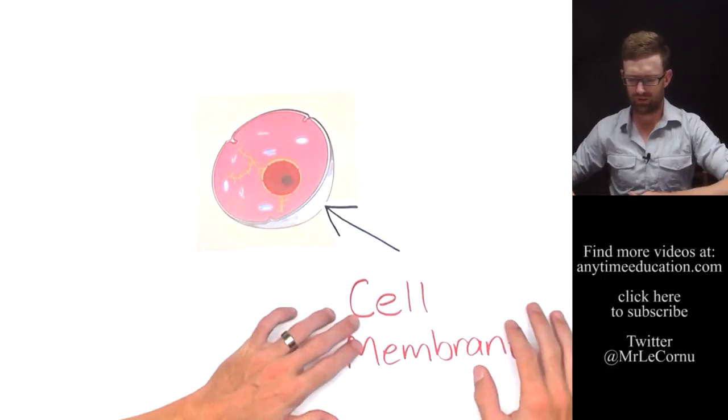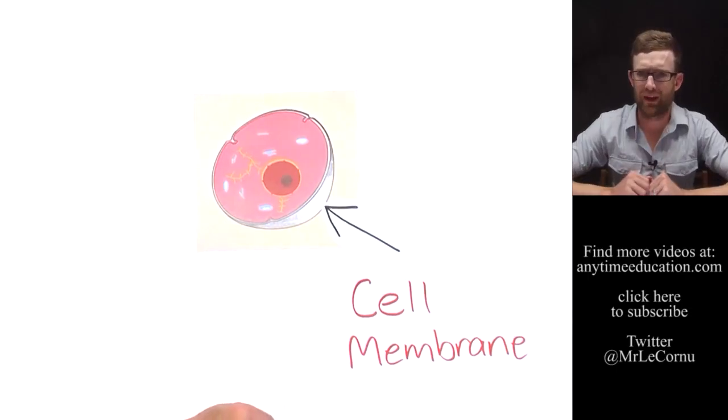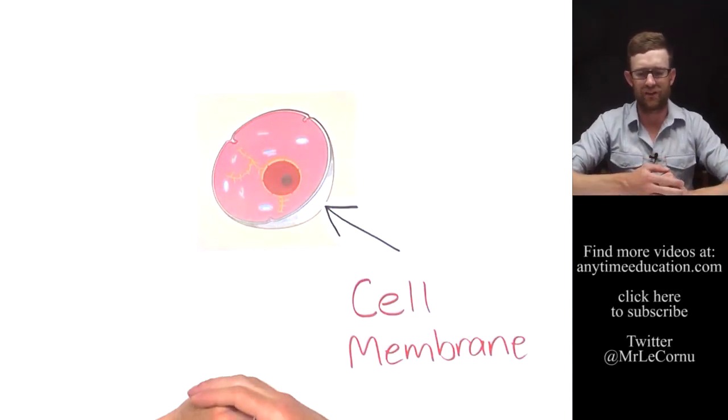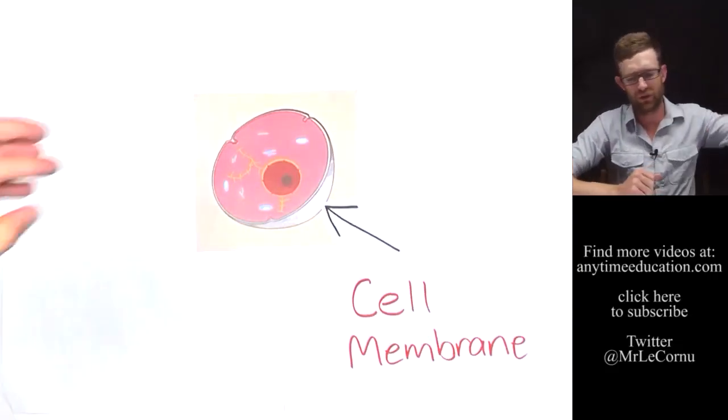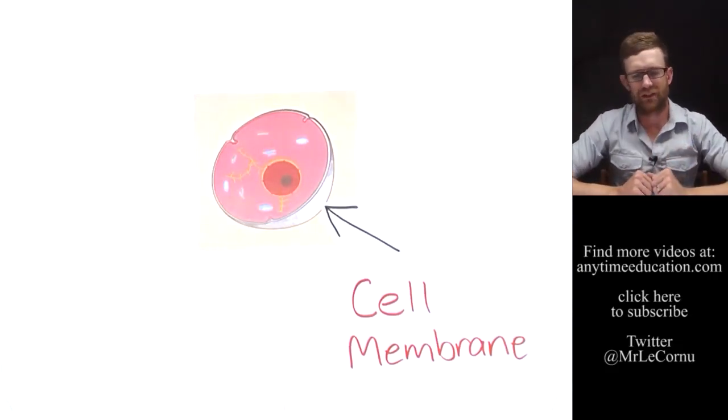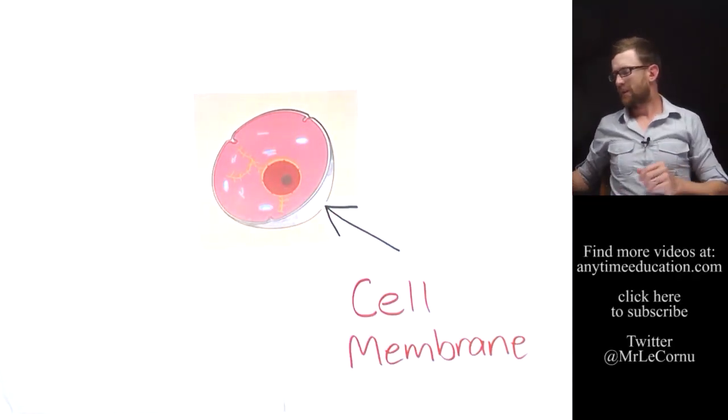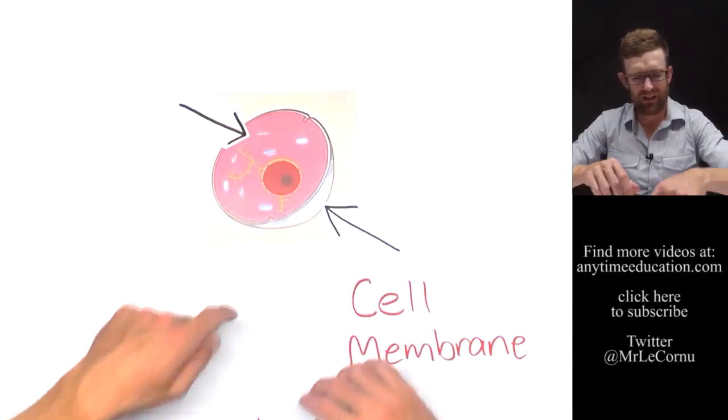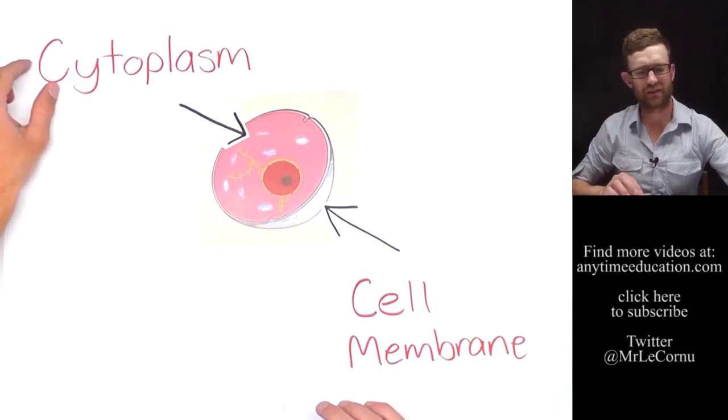Remember, with our cell here, this is a cell that's been—we've taken a cross section, so that means we've got a three-dimensional cell that we've cut across the middle, and we're looking in like so. The cell membrane is around the outside, and then inside, just this pink area here where we have the fluid inside of a cell, we call that the cytoplasm.